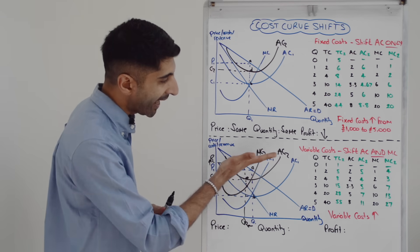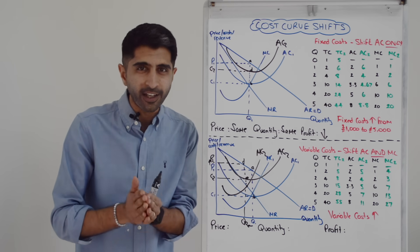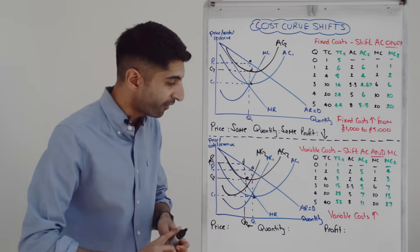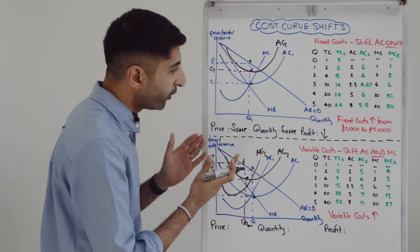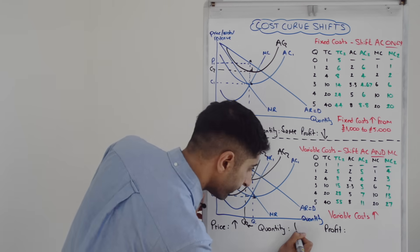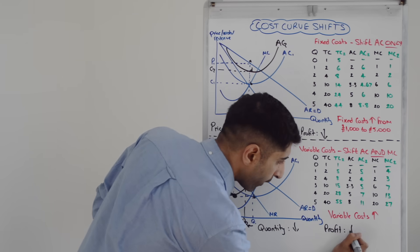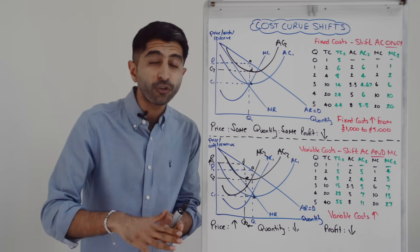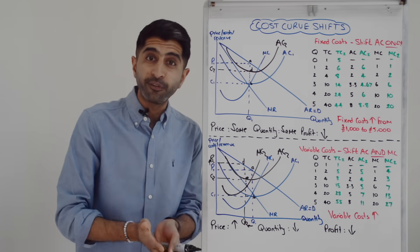And that makes a lot of sense. When we're shifting AC and MC, it's equivalent to a supply shift left where we expect higher prices, lower quantity and lower profit. That's exactly what we're showing here. So with an increase in variable costs, price goes up, quantity goes down, profit goes down. It's the exact opposite if variable costs decrease: price will reduce, quantity will be driven up, and profit will increase.